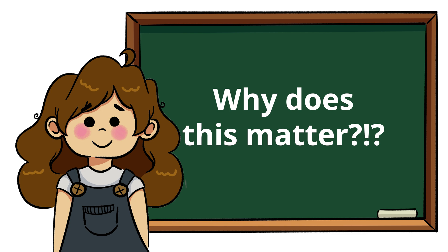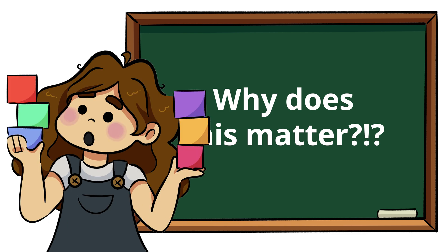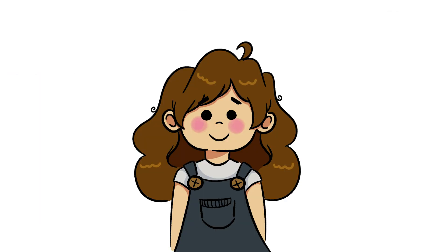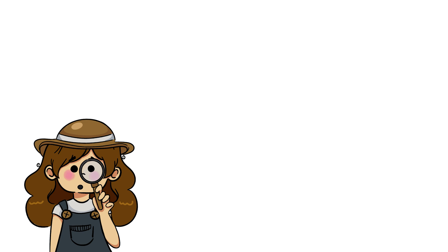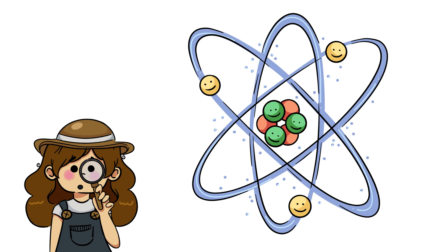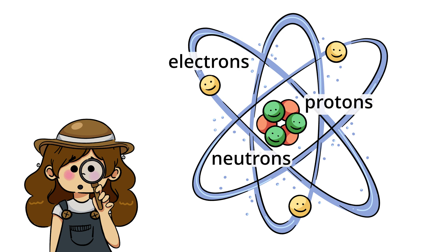So, why are we talking about matter when this lesson is about elements? Matter is important because it's what elements come together to create. In other words, elements are the building blocks of matter. An element is the purest fundamental substance in our world, so pure that it can't even be broken down by chemical reactions. If you zoom in even further, the smallest piece of an element is the atom, which is made up of protons, neutrons, and electrons.